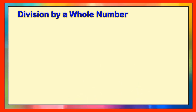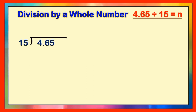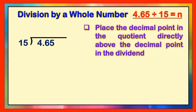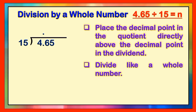Let us have another example on division by a whole number. Let's take this division number sentence of 4 and 65 hundredths divided by 15 is equal to n. Here's another way of writing this division number sentence. Now, we can proceed on the first step: place the decimal point in the quotient directly above the decimal point in the dividend, like this one. Then the second step is to divide like a whole number. Remember, children, we're going to follow the steps: divide, multiply, subtract, and bring down.